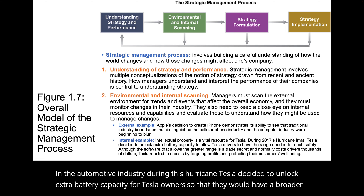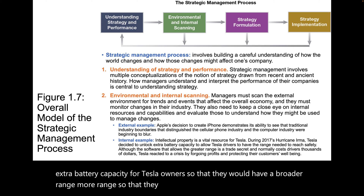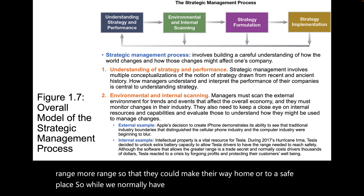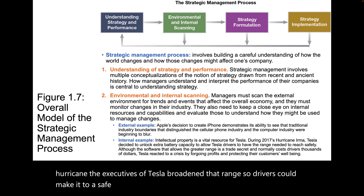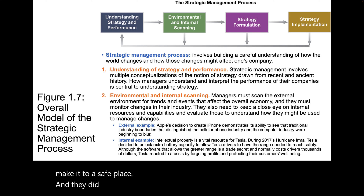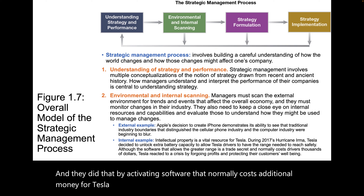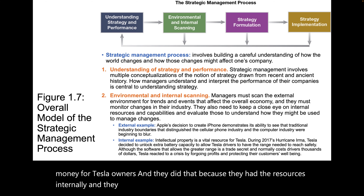Tesla unlocked that extra range so drivers could make their way home or to a safe place. While Teslas normally have a shorter range, the executives broadened that range by activating software that normally costs additional money for Tesla owners. They did that because they had the resources internally and they were looking after their customers.